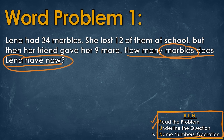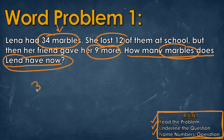Now we're going to name the numbers and the operation. We have 34 marbles, she lost 12 of them, and then she got 9 more. So we know she originally started with 34 and it looks like she lost. When we see that word lost, missing, or gone, that's always going to mean subtraction.